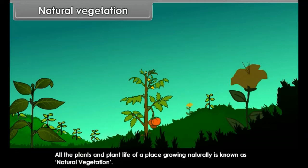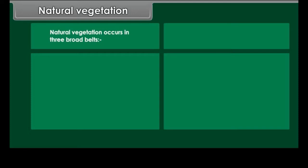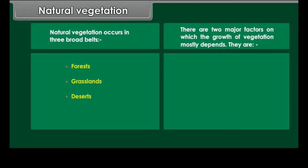Natural vegetation occurs in three broad belts: forests, grasslands, and deserts. There are two major factors on which the growth of vegetation mostly depends: temperature and moisture.